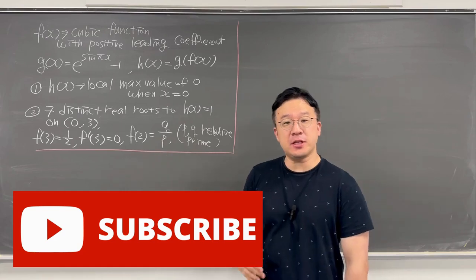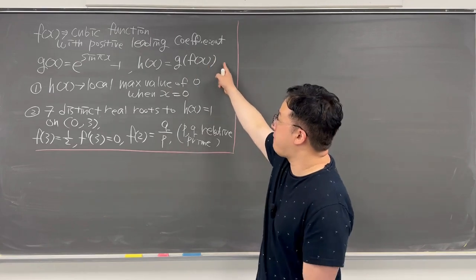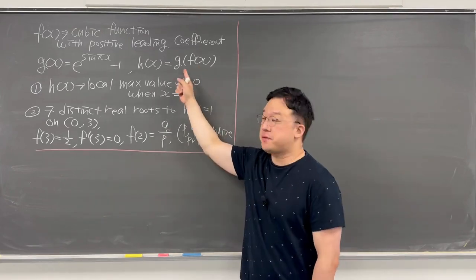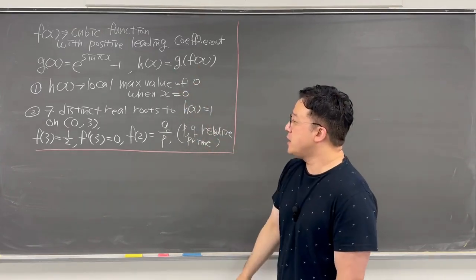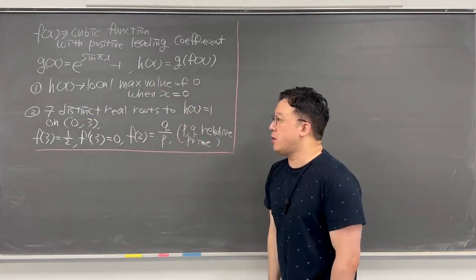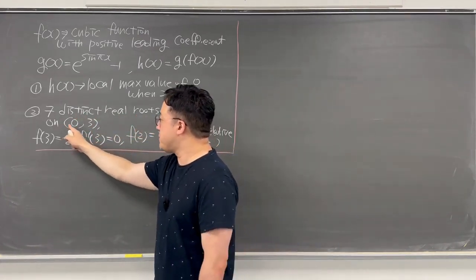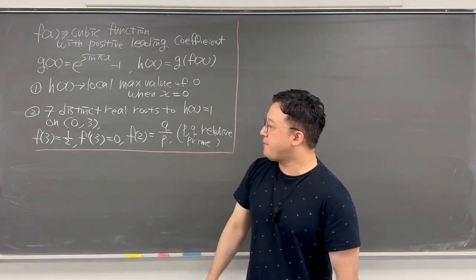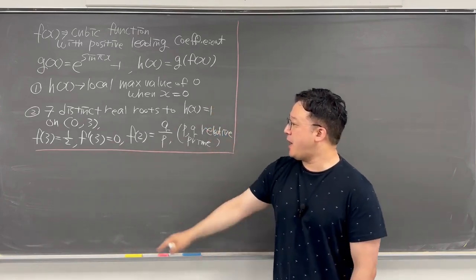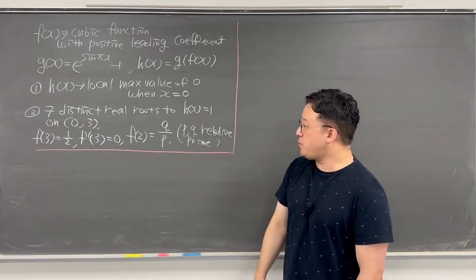Okay, here's the summary of the question — the full description is at the beginning of the video. So f(x) is a cubic function with a positive leading coefficient, and g(x) is e to the power of sine πx minus 1. And h(x) is a composite function, g of f(x). We have two conditions: h(x) has a local maximum value of 0 when x equals 0, and there are seven distinct real roots to h(x) = 1 on the open interval from 0 to 3. Also, f(3) = 1/2, f'(3) = 0, and if f(2) = q/p where p and q are relatively prime natural numbers, what is p plus q?